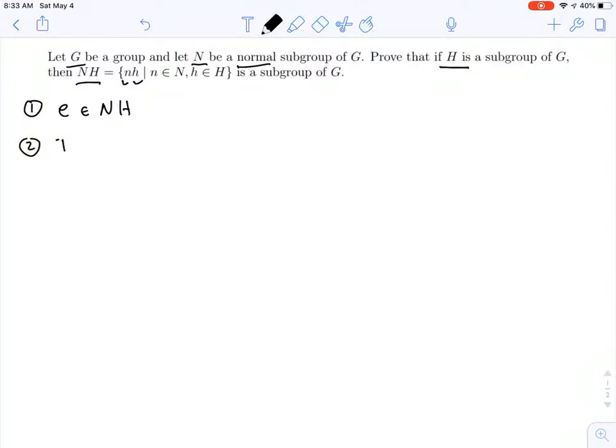Second, we need to show that if you have two elements x and y in this product subgroup, then their product x times y is also in NH. And third, we need to show that if you have some element x in NH, then the inverse element of x is also in NH.